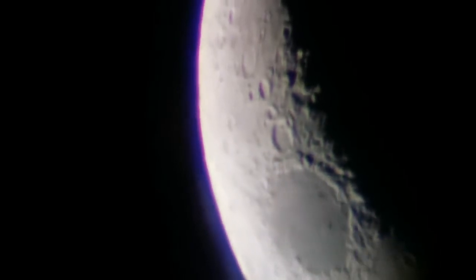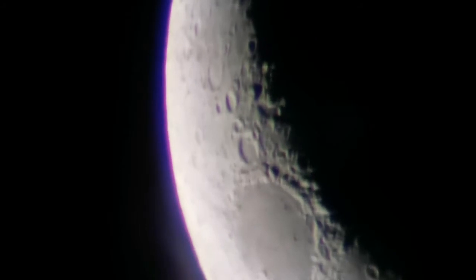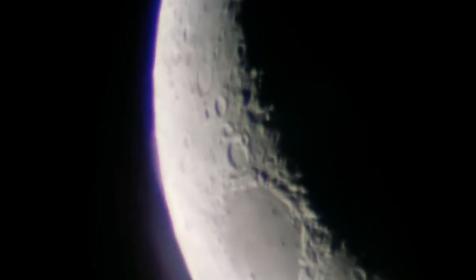This is very high magnification with the TMB 3.2-millimeter eyepiece. You can see Mons Piton and the Mare Imbrium in the lower part of the center.